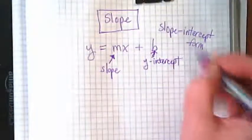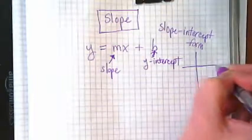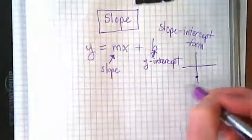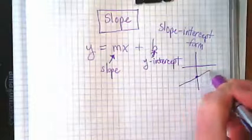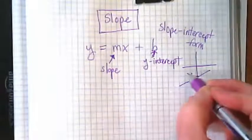And the y-intercept tells us on a graph, if we have a line, where it's crossing the y-axis.